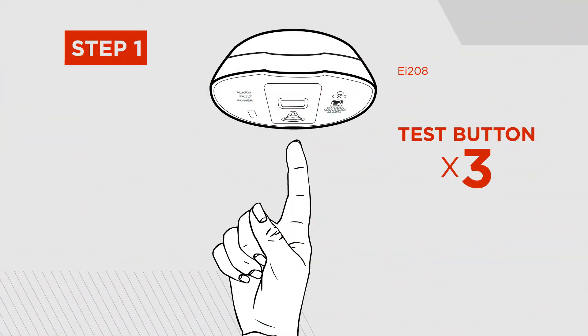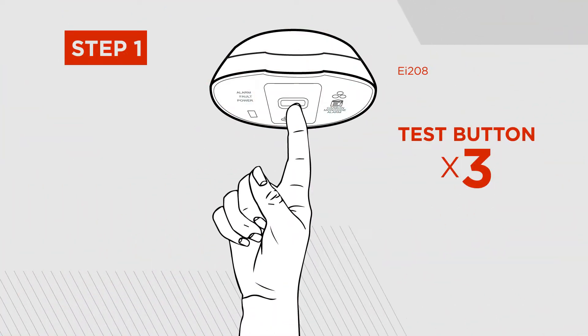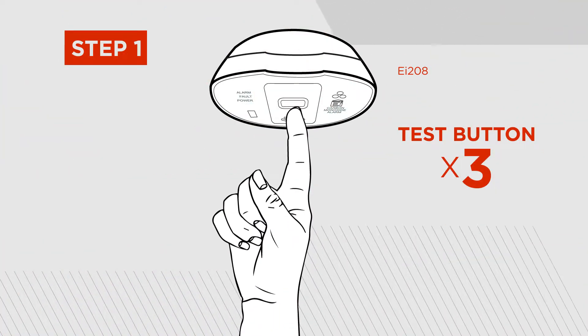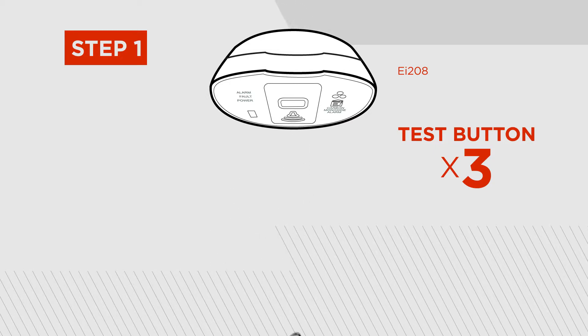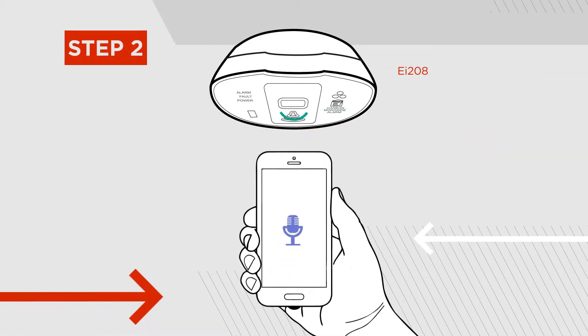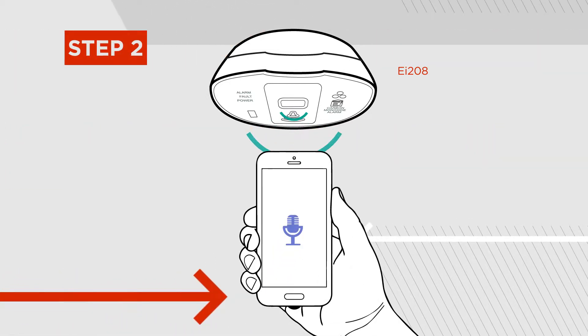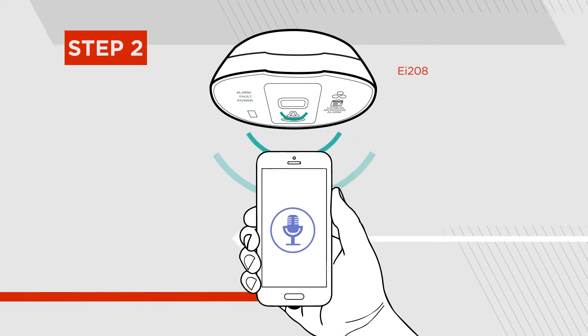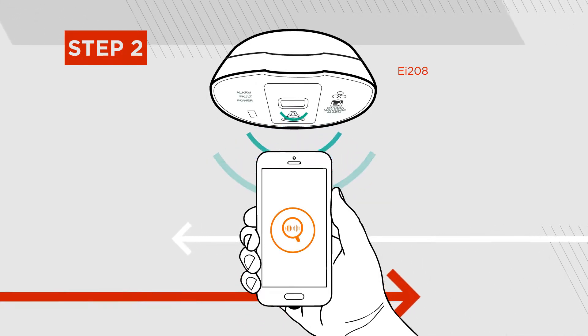Step 1: Press the test button on the alarm three times. Step 2: The alarm will emit a number of beeps. The phone or tablet will pick these up via the microphone.